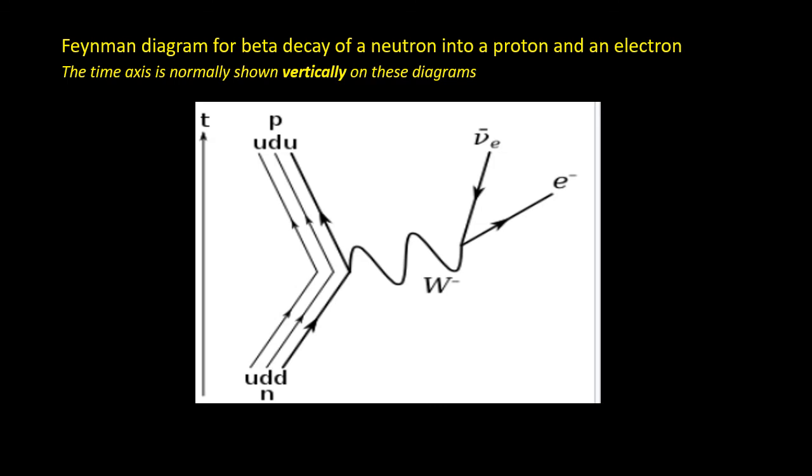This diagram, which is called a Feynman diagram, shows a form of beta decay. A neutron, which consists of one up and two down quarks, is converted into a proton, which consists of two up and one down quark. In doing so, it emits an electron and an electron anti-neutrino. The particle labeled W-minus is called the W-minus boson, and is extremely short lived.